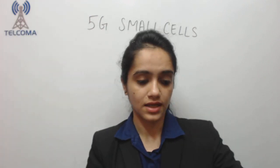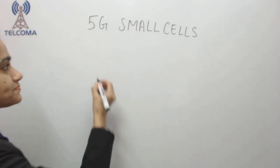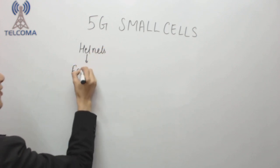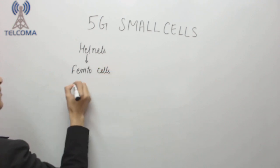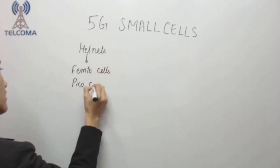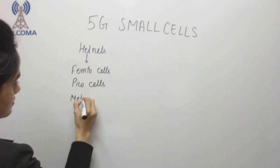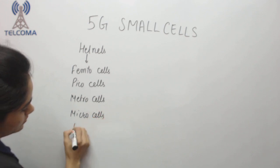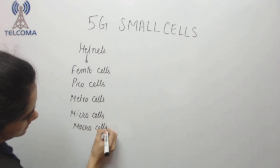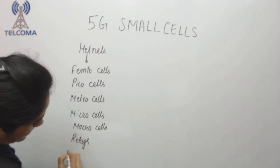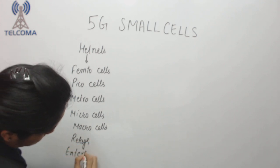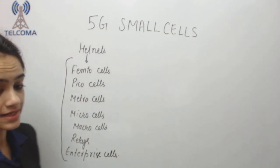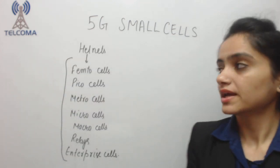In HetNets, the kinds of small cells we are using include: femto cells, pico cells, metro cells, micro cells, and macro cells. Every kind of cell is used in a 5G HetNets, that means heterogeneous network.